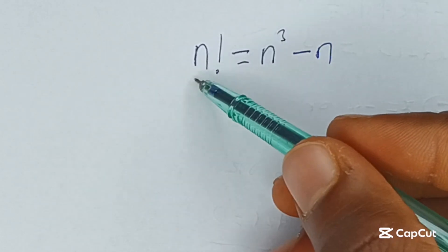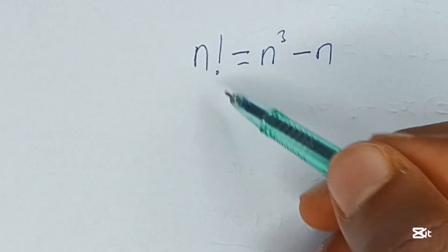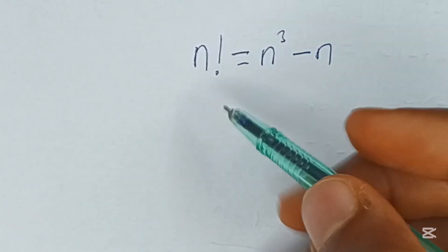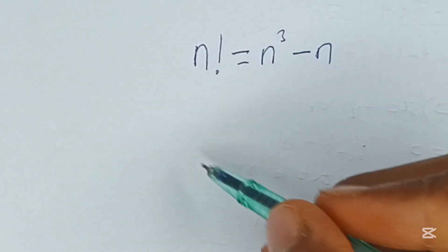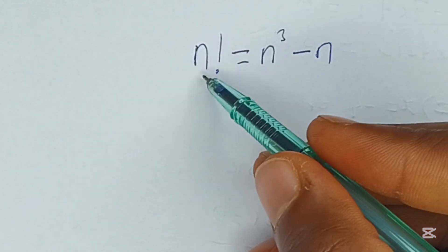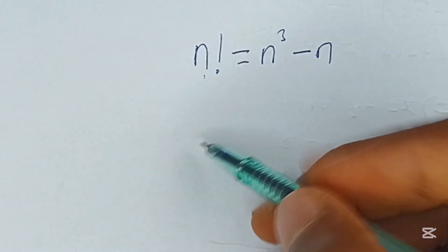Let's solve this together. It says n factorial is equal to n cubed minus n. How do we solve this? Before we start, let me explain what a factorial is.